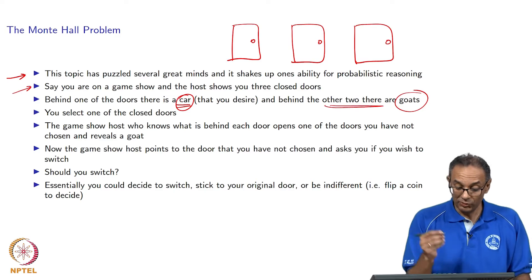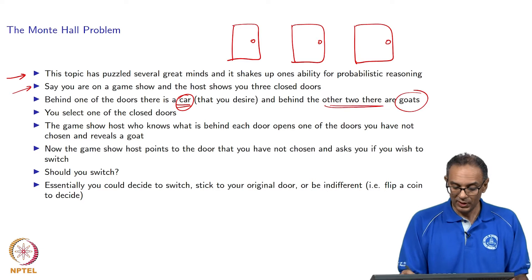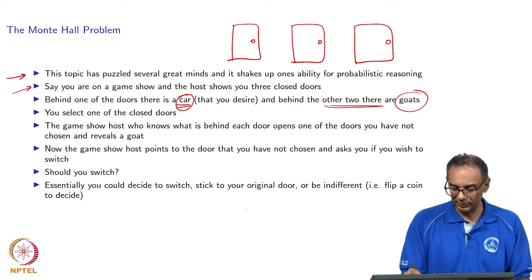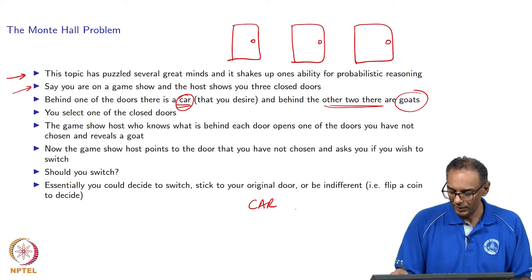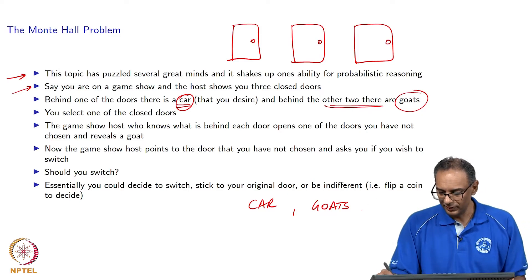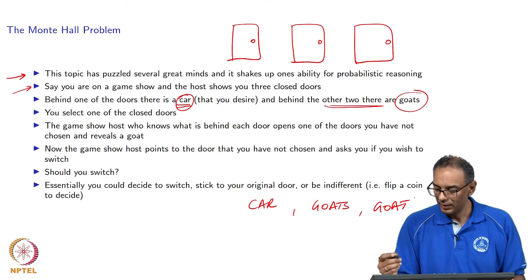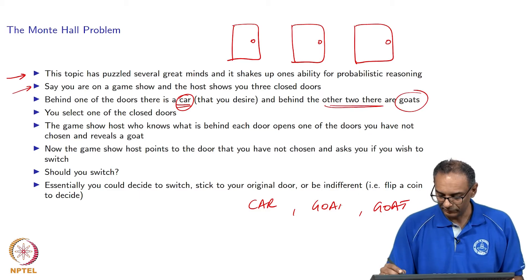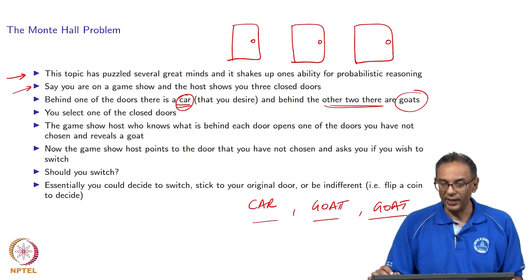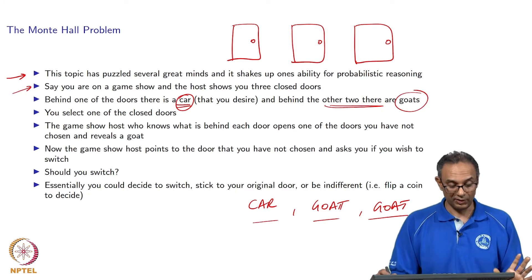You do not know what is behind each door because the doors are closed, and you are asked to select a door. So there is a car behind one door, and there are goats behind the other two doors. That is the situation right now. We do not know behind which door there is a car, and behind which other two doors there are goats.